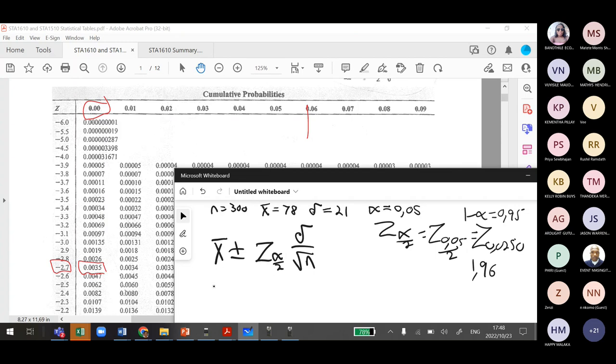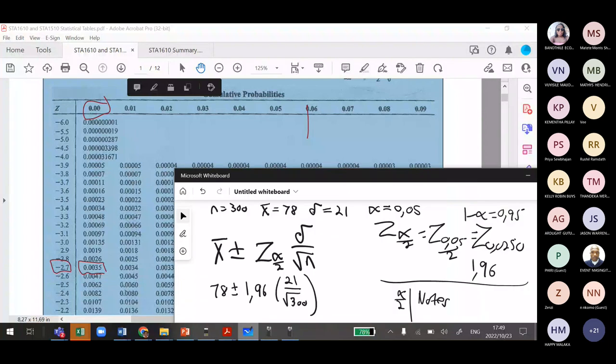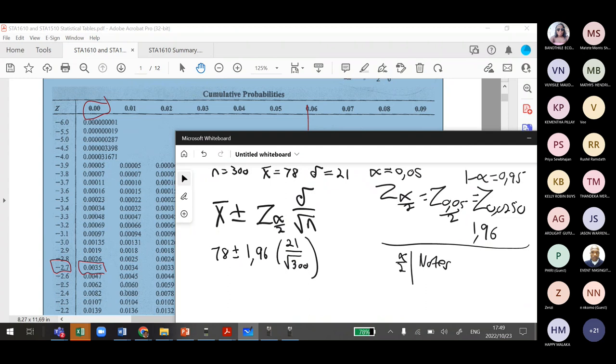So our critical value is 1.96. That is the value that we're going to substitute onto here. So we say 78 plus or minus 1.96 times our standard deviation of 21 divided by the square root of 300. What I was getting to is you need to have your alpha divided by two critical values, especially for the Z.